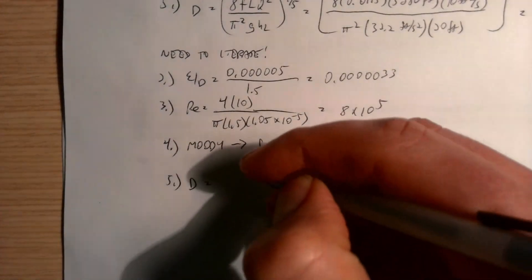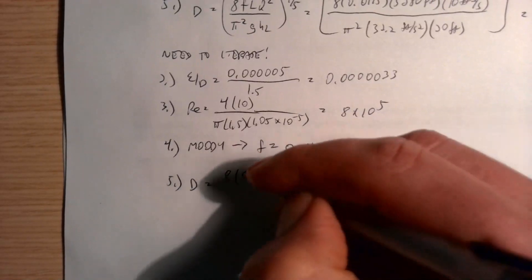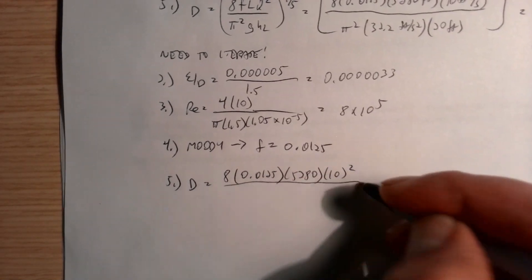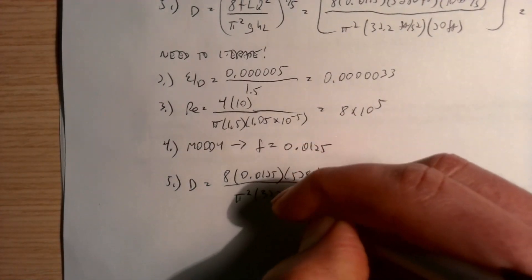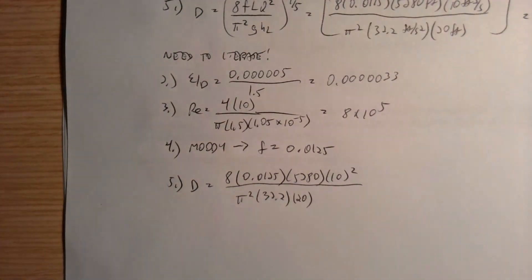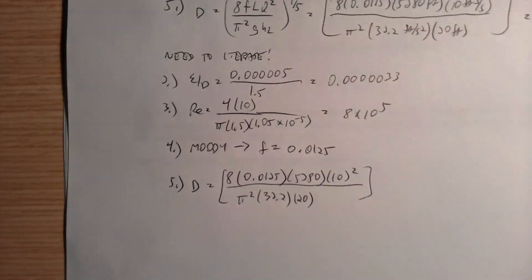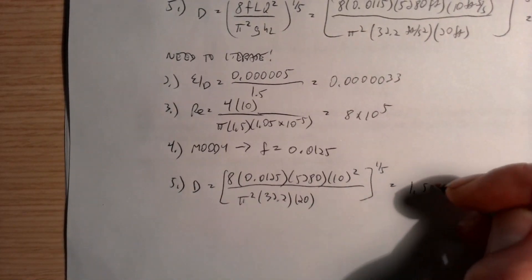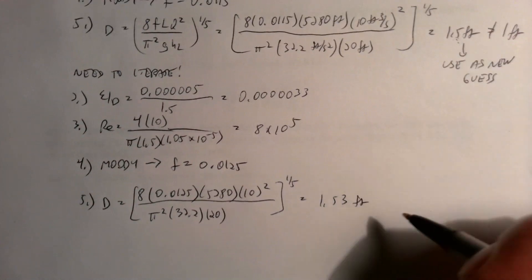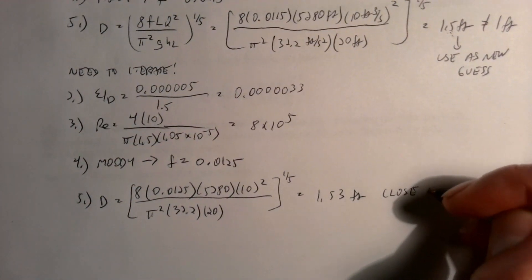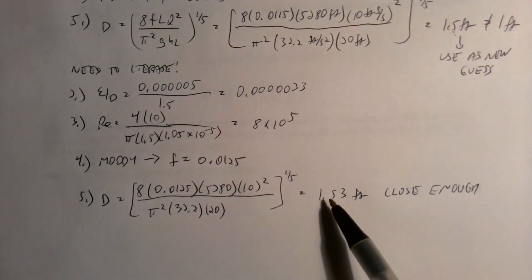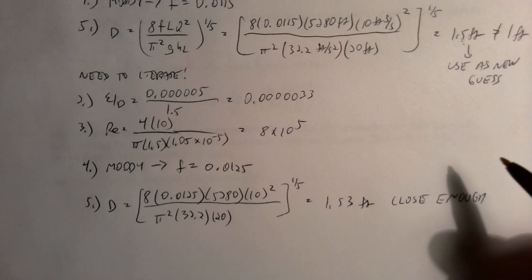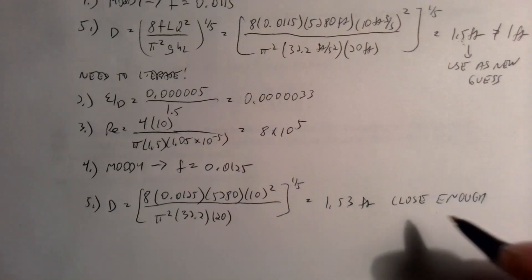Plugging f = 0.0125 into the Darcy-Weisbach diameter equation — everything stays the same except the friction factor — gives D = (8 × 0.0125 × 5280 × 10² / (π² × 32.2 × 20))^(1/5) ≈ 1.53 feet. This is very close to our previous guess of 1.5 ft, so a third iteration would produce a negligibly small change. We can accept this as converged.